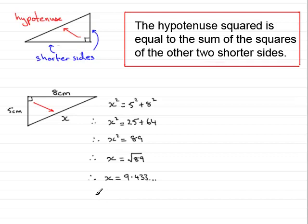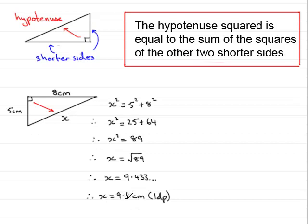Rounding to one decimal place gives x equals 9.4. Don't forget the units, which is centimeters, and don't forget to write in the approximation — in this case, one decimal place. It's always useful to look at your answer and check if it makes sense: 9.4 centimeters is longer than the 5 and the 8 centimeters.